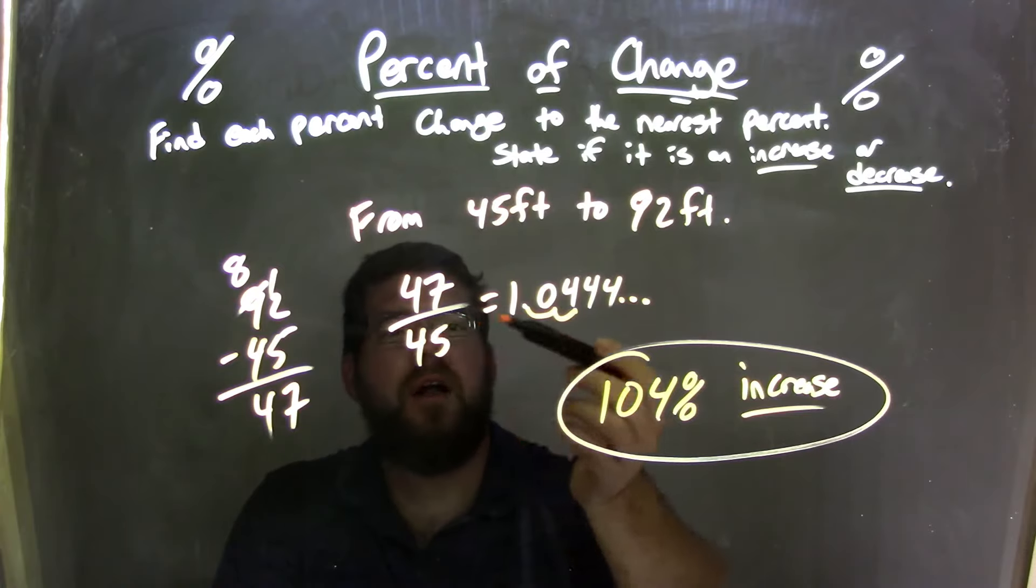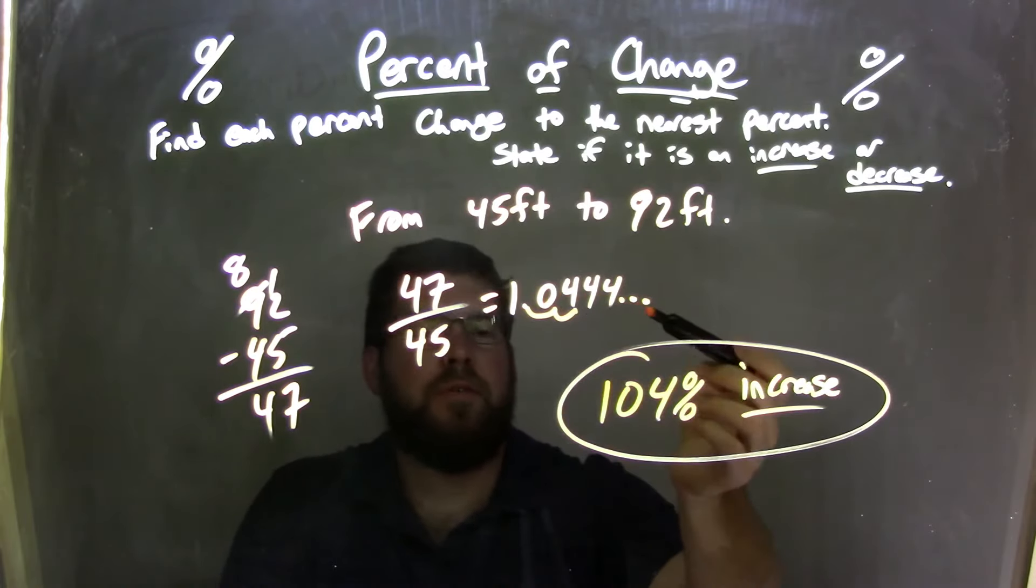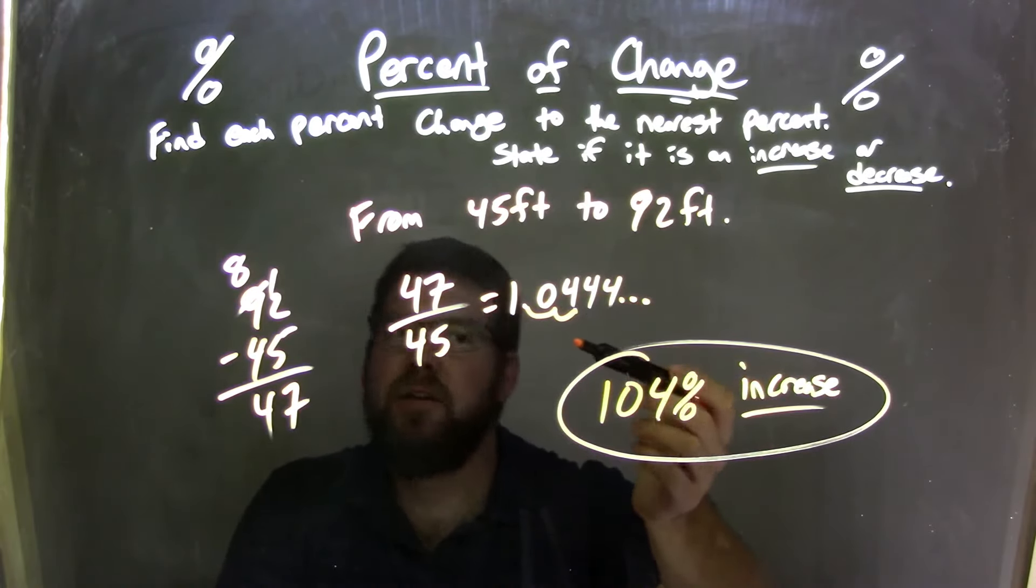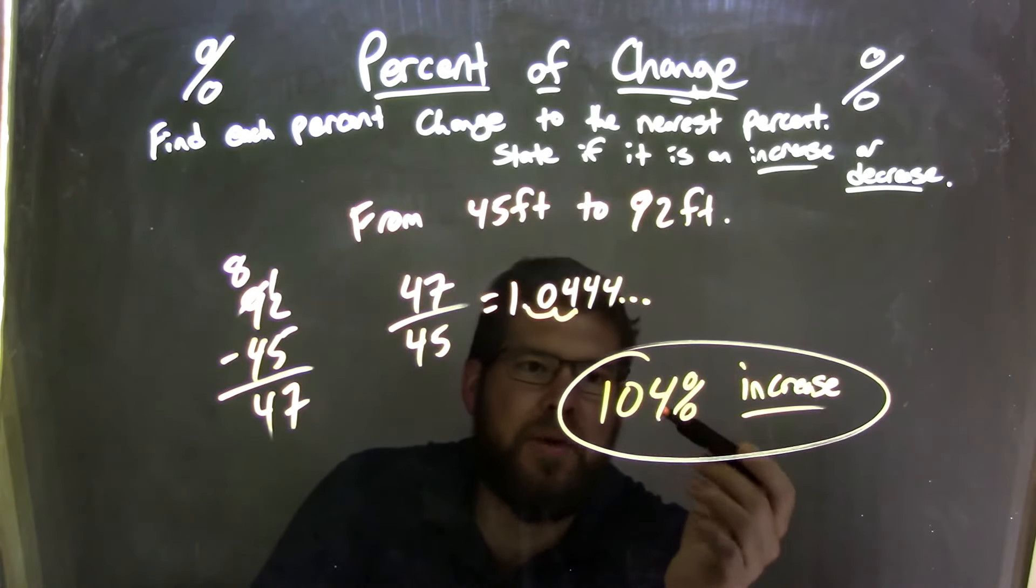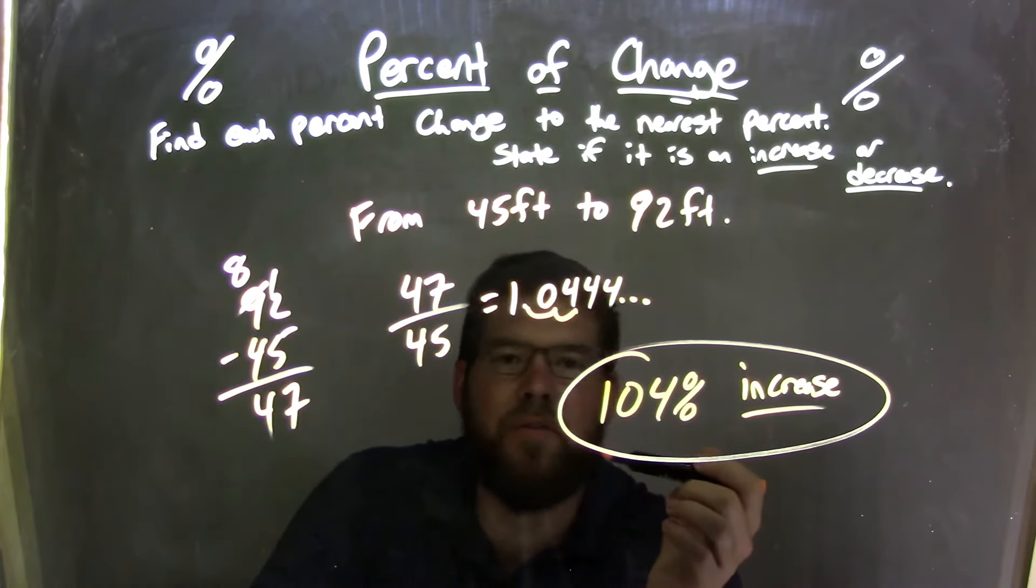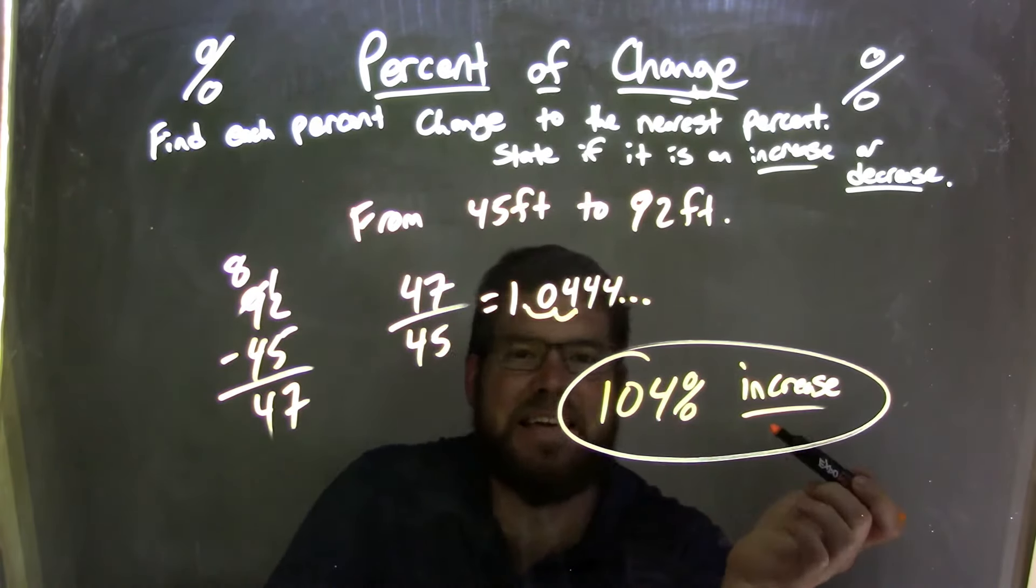Divide that by the first number. We got 1.044444. We knew that as a percent and we rounded it. It came out to be 104. So our final answer is 104 percent increase. We'll see you next week.